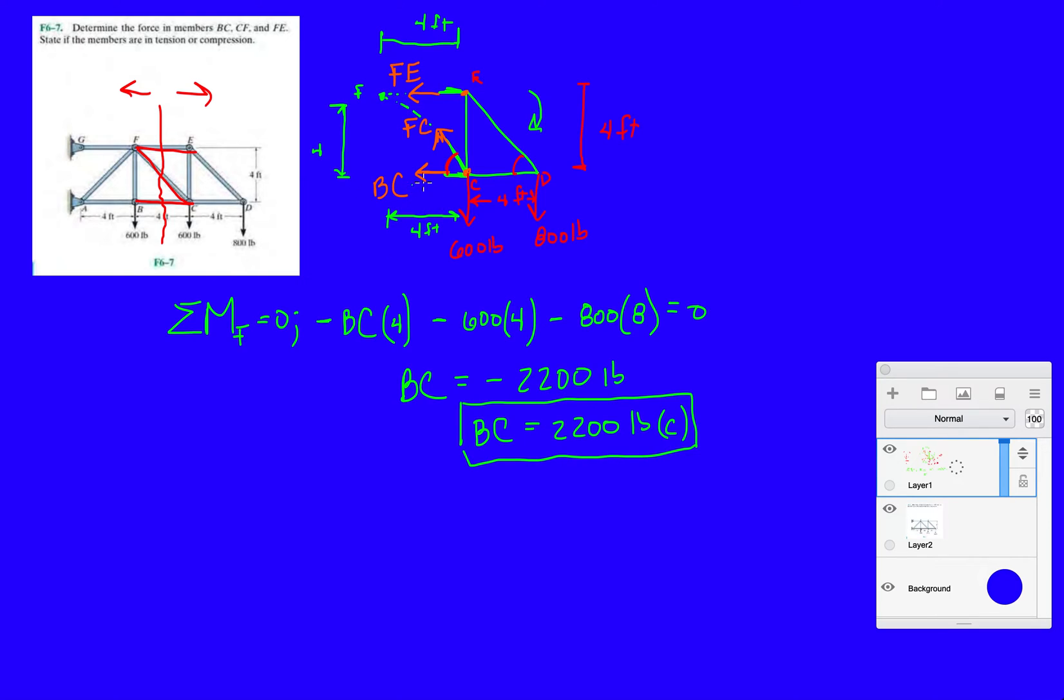That's why I said assume everything in tension initially, because then when this negative comes out in your answer, you know it's going to be the opposite of what you assumed. If this was positive, then I assumed correctly, which is going to be 2200 pounds in tension.